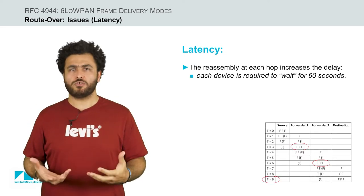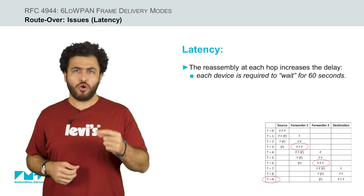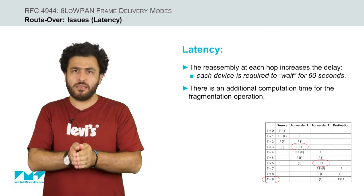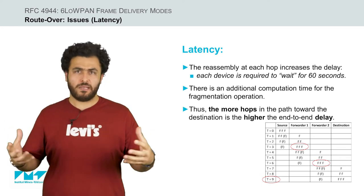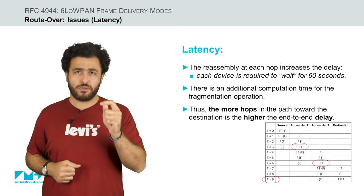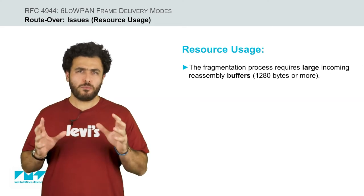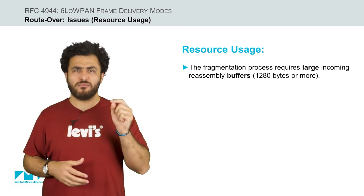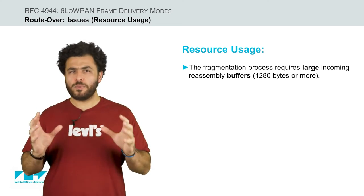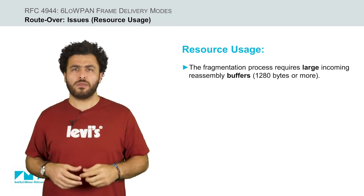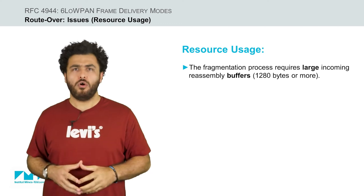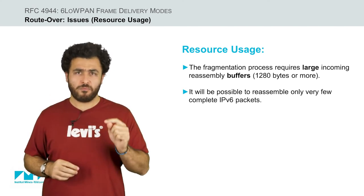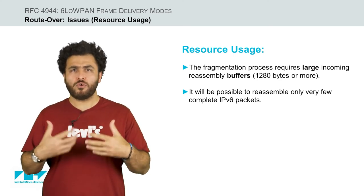Next, we have the latency issue. The reassembly operation at each hop significantly increases the end-to-end delay. There is also additional computation time to fragment again the previously reassembled IPv6 packet. As a result, the more hops in the path toward the destination, the higher the end-to-end delay. Furthermore, the fragmentation process introduces inefficient resource usage since it requires large incoming reassembly buffers at the forwarding nodes. In fact, to proceed with complete reassembly at each hop, a relay device may require 1280 bytes or more of buffer space when considering IPv6 datagrams. Considering that sensor devices are extremely constrained in terms of memory, it will be possible to reassemble only very few complete IPv6 packets.